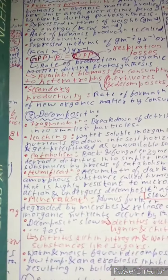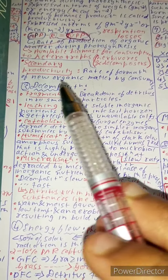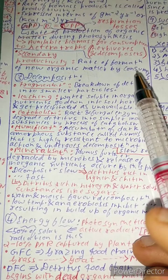Now let's see what is secondary productivity. Secondary productivity is the rate of formation of new organic matter by consumers.